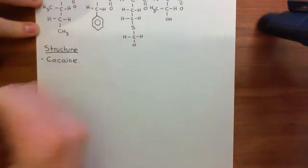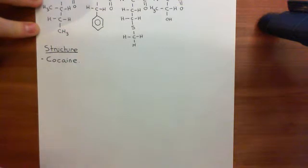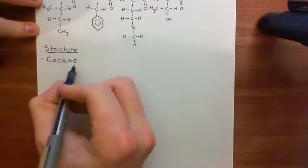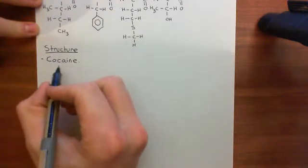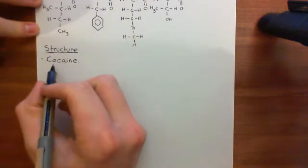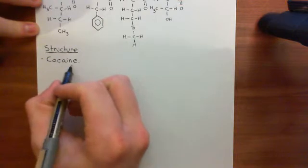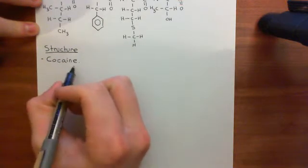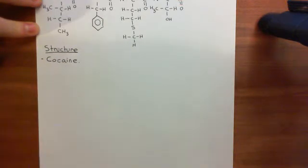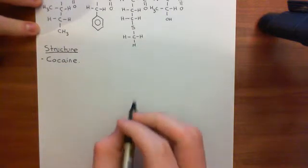Cocaine is our first ever local anesthetic and this is why all of the local anesthetics have at the end of their name the suffix '-caine' - well, most of them do. So you have, for instance, benzocaine, procaine, and lidocaine is the other example I'm going to give you in a moment.